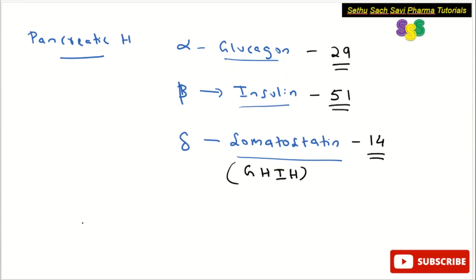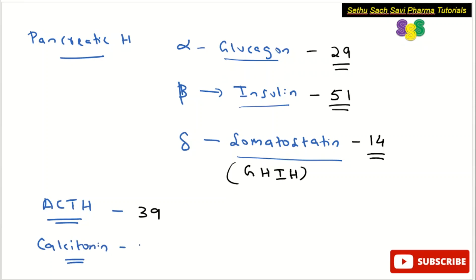Apart from this, you need to remember other hormones like adrenocorticotropic hormone (ACTH), which contains 39 amino acids. Another hormone to remember is calcitonin, which is also a peptide hormone and is made up of 32 amino acids. ACTH contains 39 amino acids and calcitonin contains 32.